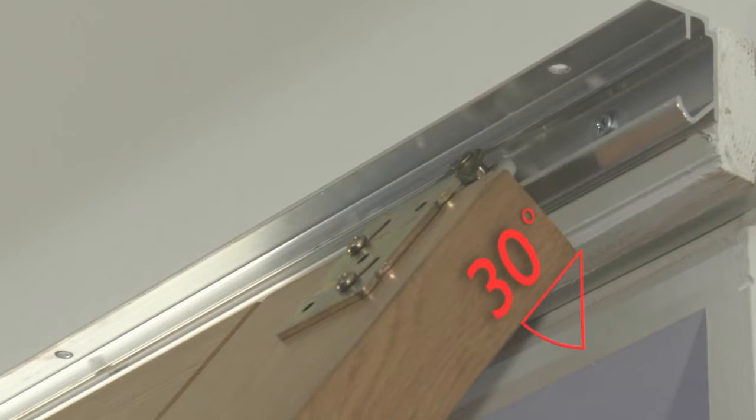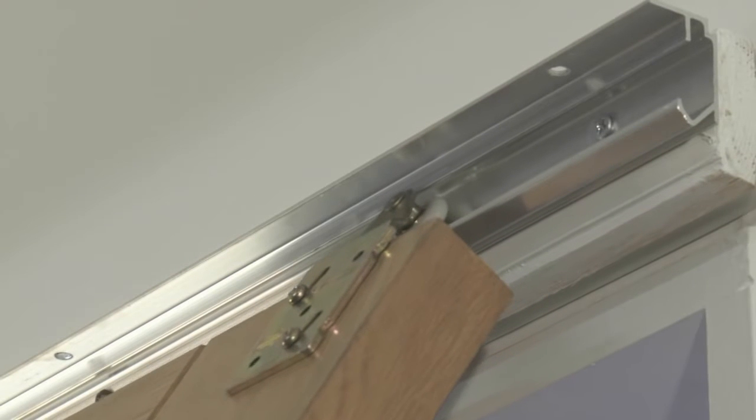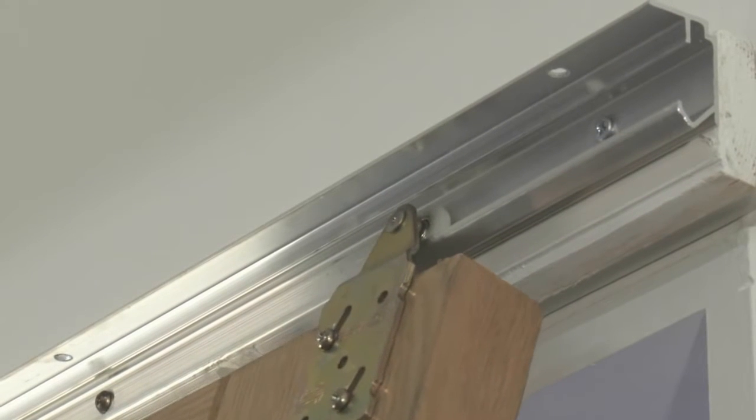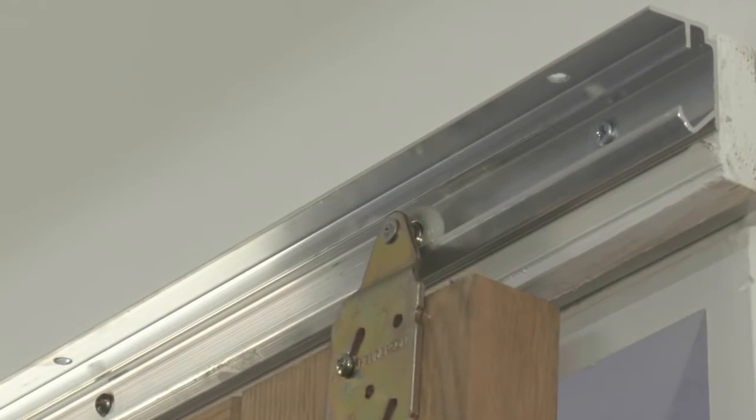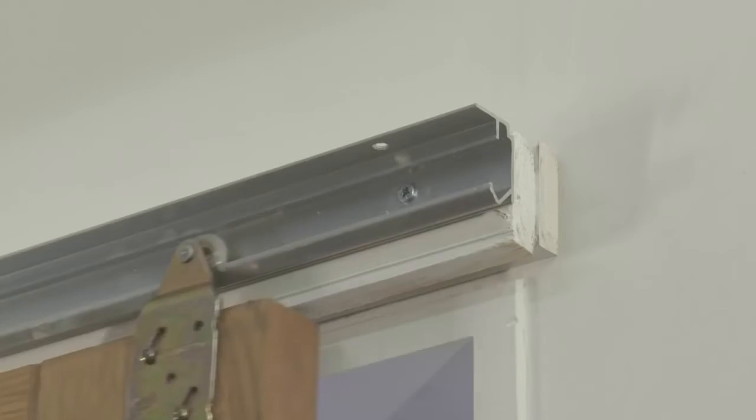you can lift the door onto the track at a 30-degree angle to locate the hangers and then gently hang the door vertically. Test that the door is running correctly and smoothly by sliding the door up and down the track.